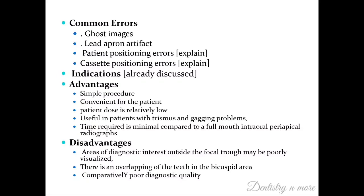Patient positioning errors are based on proper placement of the patient within the focal trough, which is necessary for diagnostic panoramic radiographs. If out of the focal trough, certain errors occur. If the patient is positioned too far posterior relative to the focal trough, the image is magnified in the mesiodistal dimension — the teeth look fat. If the patient is positioned too far anterior in the focal trough, there is a reduced mesiodistal dimension in the anterior sextant. Cassette positioning errors are also explained in this chapter. The indications were mentioned in the previous section.